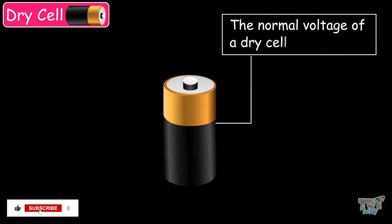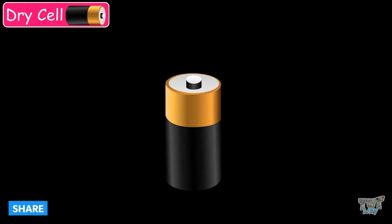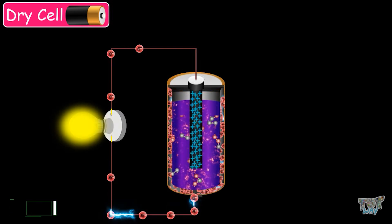The normal voltage of a dry cell is 1.5 volts. So, today, we have learned about a dry cell and how a dry cell can be used to light a bulb.